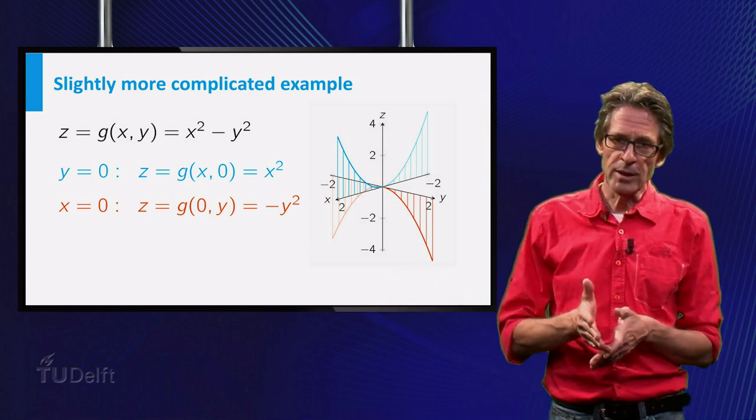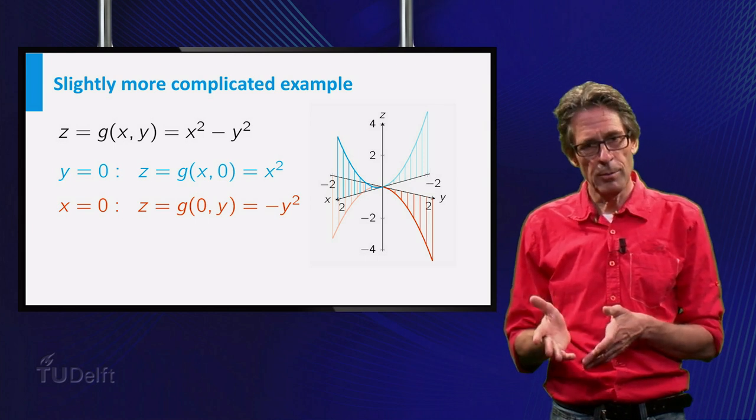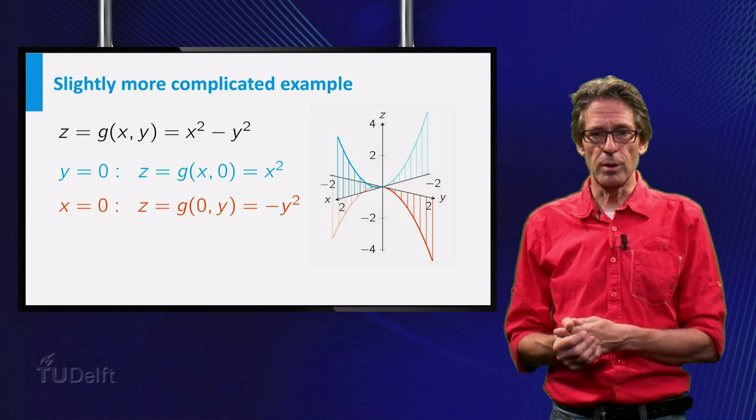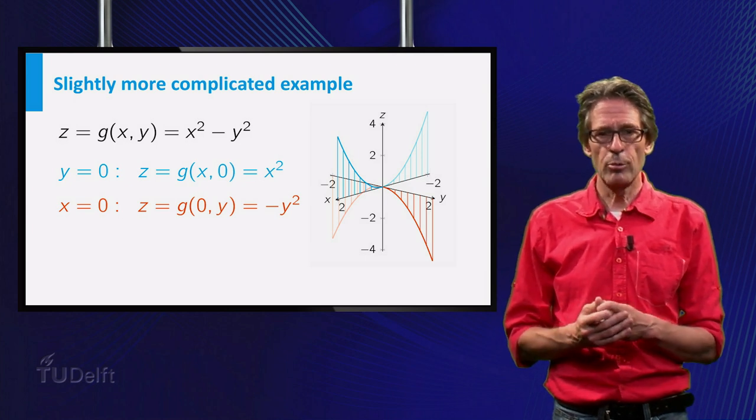So with respect to x, f takes on a minimum, and with respect to y, f takes on a maximum at the point (0, 0). There is a name for behavior like this. The corresponding point of the graph is called a saddle point,